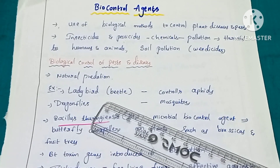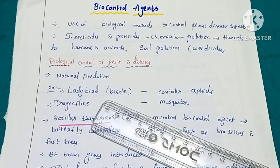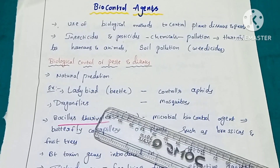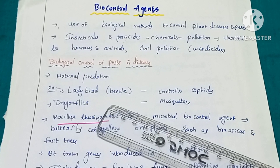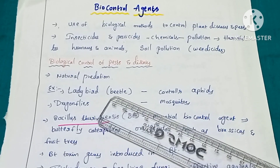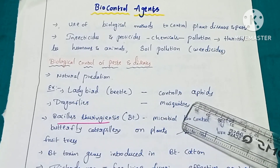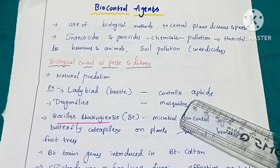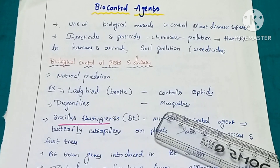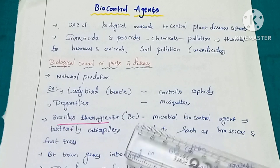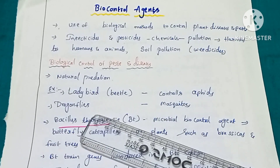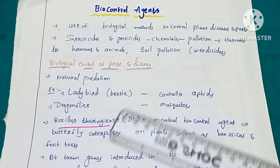For example, the ladybird beetle — which is red colored with black spots on its back — controls aphids. Aphids are also insects and are considered pests. Mosquitoes are also pests, and these mosquitoes are controlled by dragonflies.